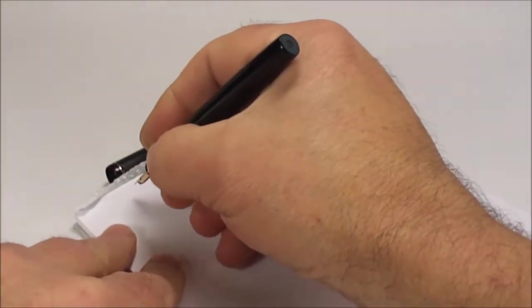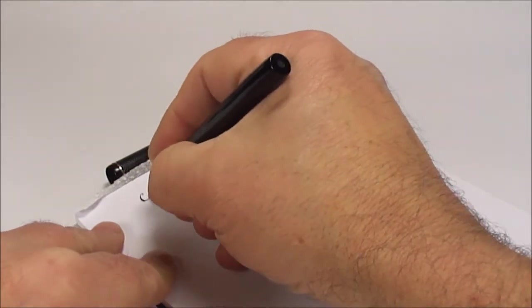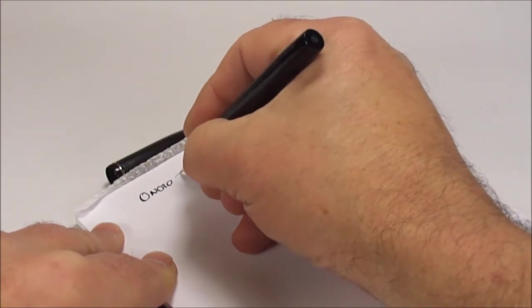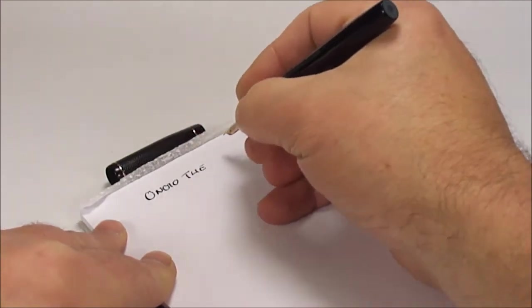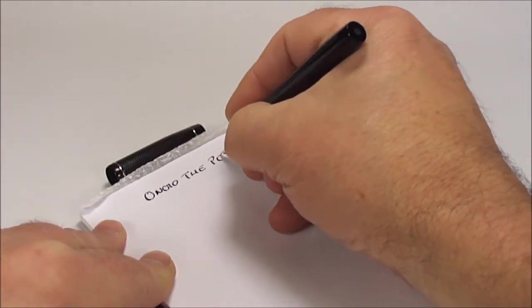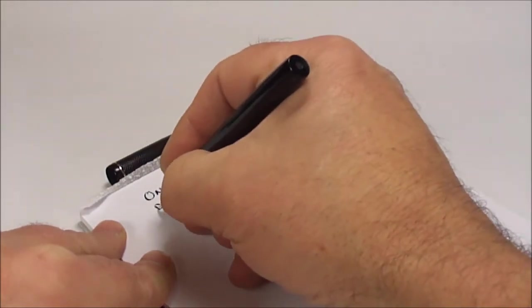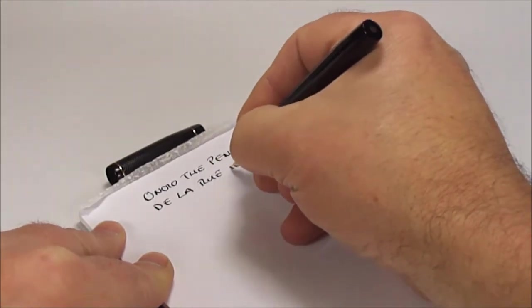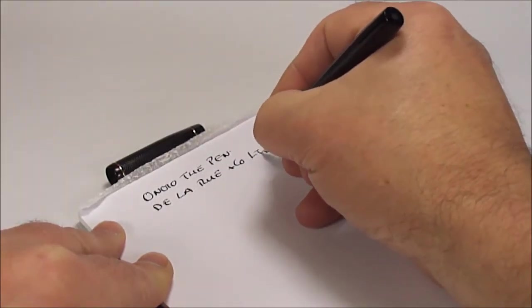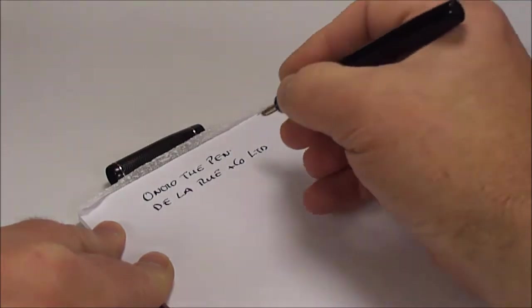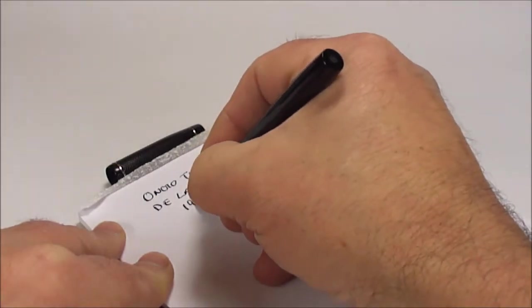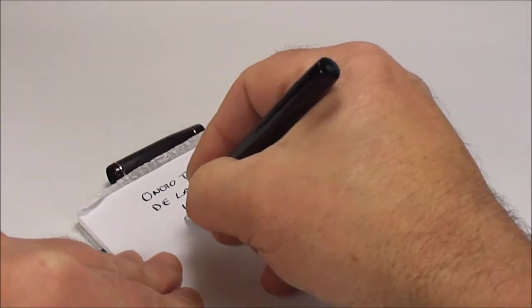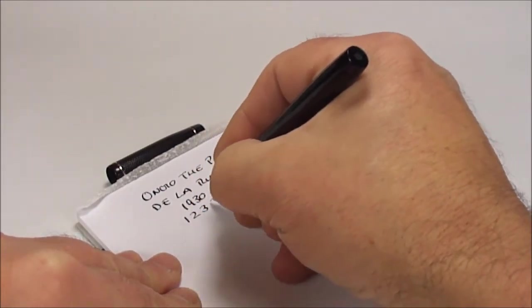So, let's see how it writes. So, what we've got is Onoto. Onoto. The Pen by De La Rue and Company Limited. As we said, made in London. We're dating the pen from the 1930s. It's writing very nicely. Nice and smooth.